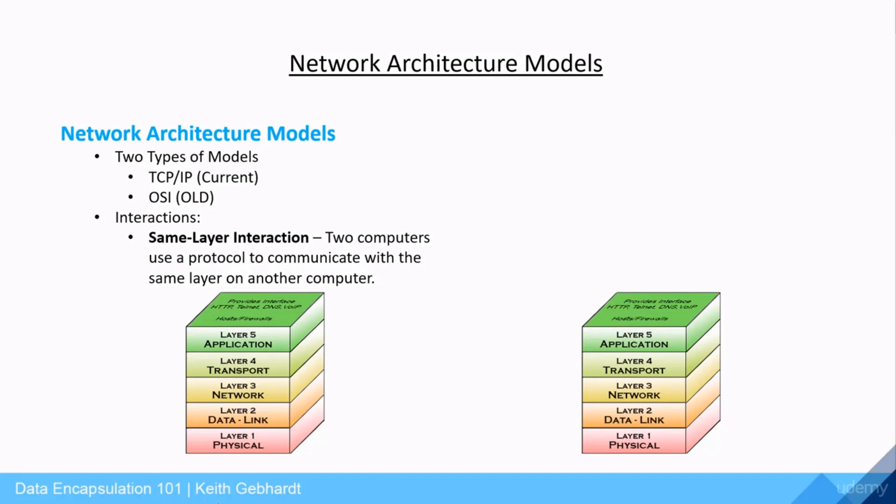The first method is the same layer interaction, which is when two computers use the same protocol to communicate with the same layer of the architecture model on another computer. For example, our layer 4 here will use the TCP or UDP protocols to establish a connection to another network device.